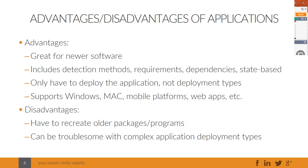With packages and programs, if a required deployment installs software and the end user uninstalls it, Configuration Manager won't push it back out. With applications, it would — if you make a required deployment and the software gets uninstalled, Configuration Manager will reinstall it via the application evaluation cycle. The same goes for uninstalls: if you deploy a required uninstall and a user reinstalls the old software, Configuration Manager will uninstall it and reinstall the new one automatically because of its state-based nature.